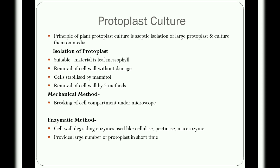The next application in agriculture biotechnology is protoplast culture. The principle of plant protoplast culture is the aseptic isolation of large protoplasts and culturing them on medium. Isolation is done in sequential stages: a suitable material such as leaf mesophyll is selected, the cell wall is removed without damage, and cells are stabilized using the inert sugar mannitol as a hypertonic solution.